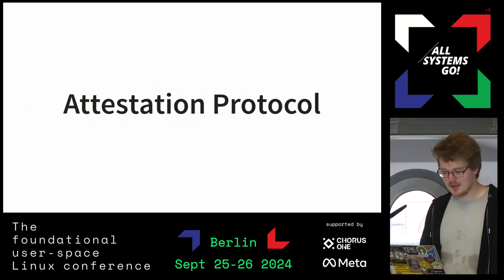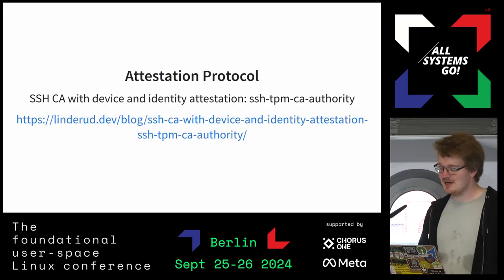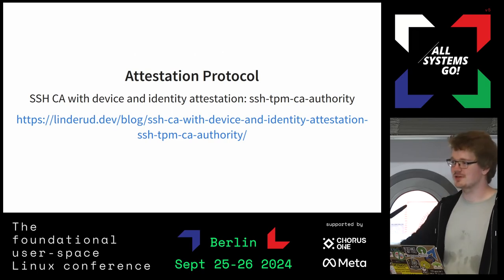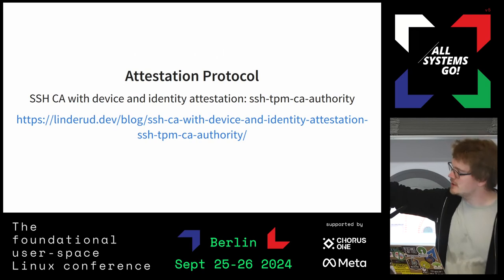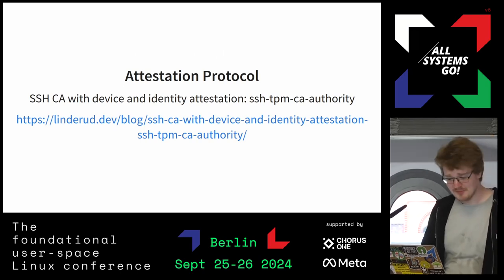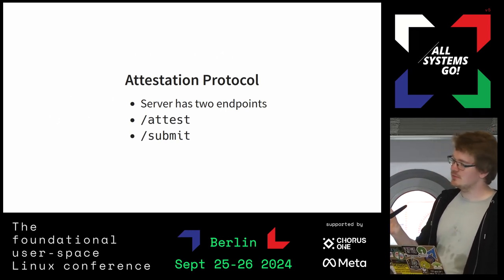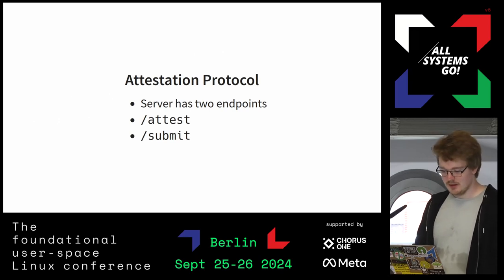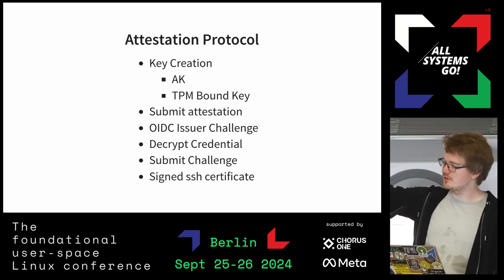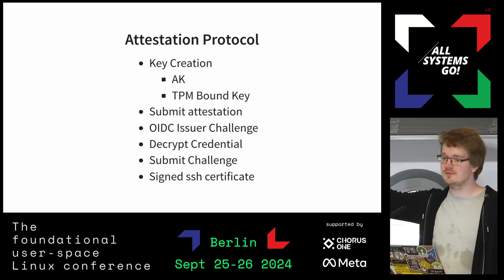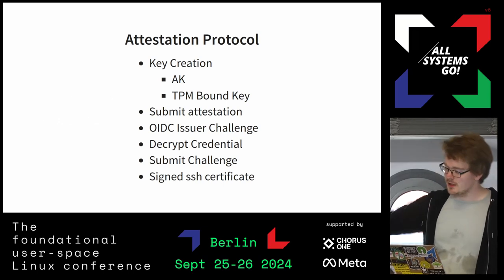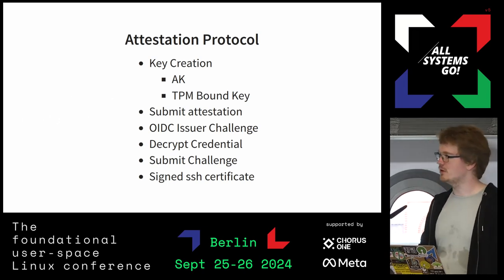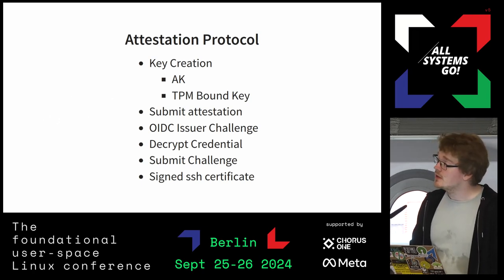Now the attestation protocol — I think this is actually the hardest part because I have sequence diagrams. I did a blog post on this not long ago; if you want to re-read the attestation protocol details, there's the blog post with the sequence diagram. The CA authority has two endpoints: an attest endpoint that starts the transaction, and a submit endpoint that completes it and gives you back the signed SSH certificate. The attestation protocol has a few parts: key creation, submitting attestation of those keys, receiving an OIDC-issued challenge with the nonce to include in the provider, decrypting the challenge credential which contains a secret value, submitting all of this, and then the CA gives back the signed SSH certificate.